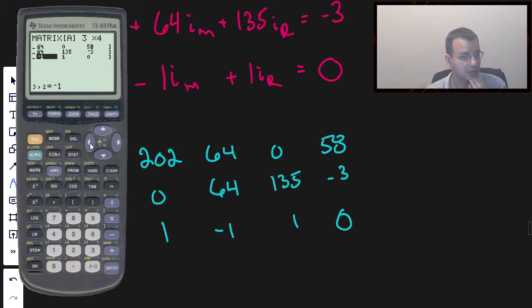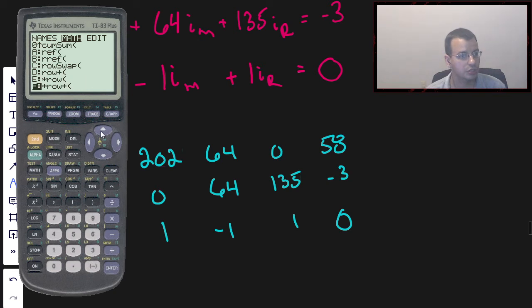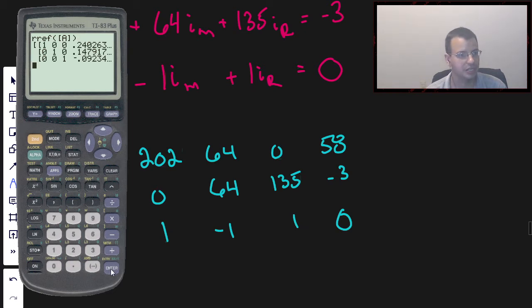Alright, so this is our matrix: 202, 64, 0, 58, 0, 64, 135, negative 3, 1, negative 1, 1. Second quit, second matrix. Now we're going to do some math with this matrix. We're going to do row reduced echelon form, RREF. And we're going to do that using matrix A that we just created. Close parentheses.